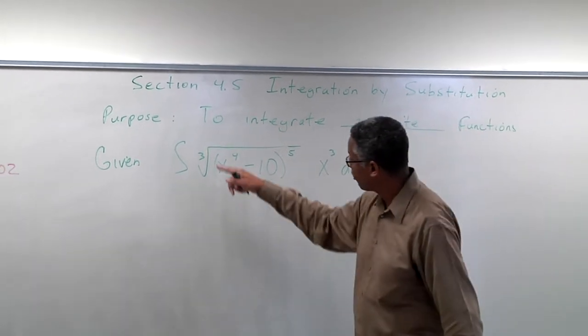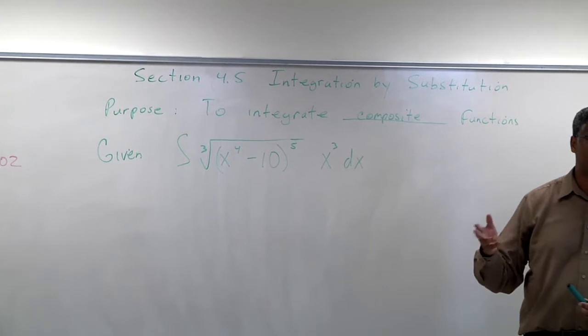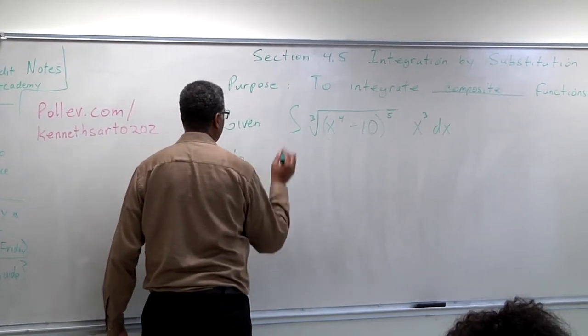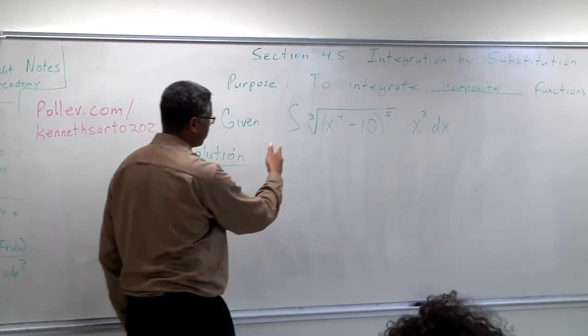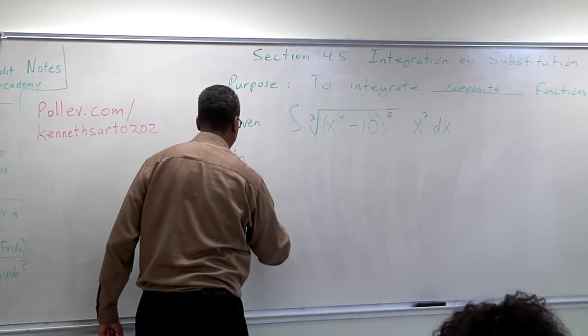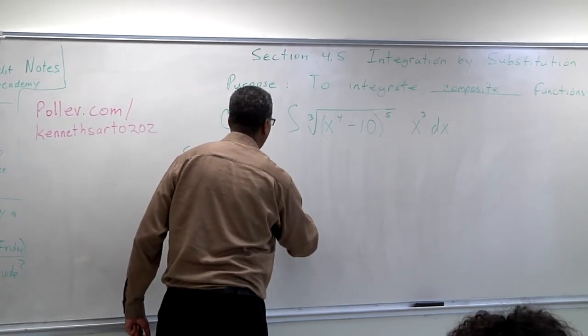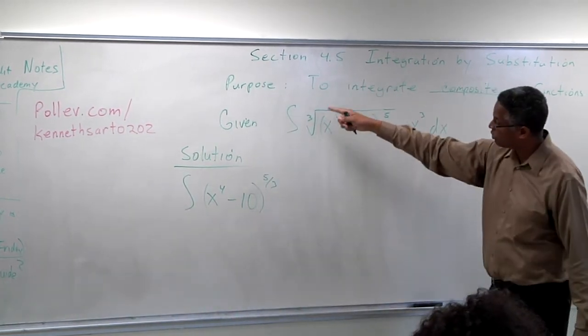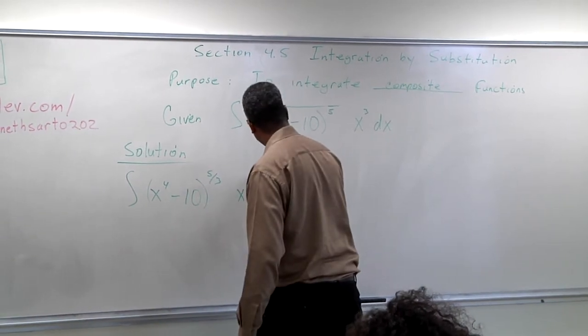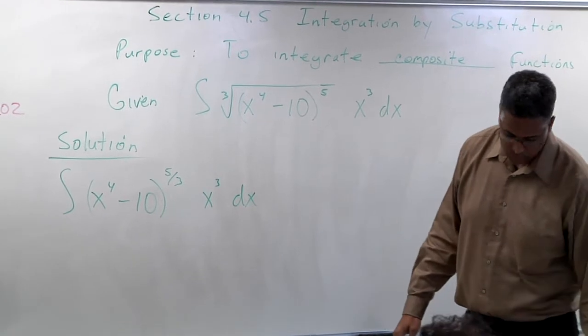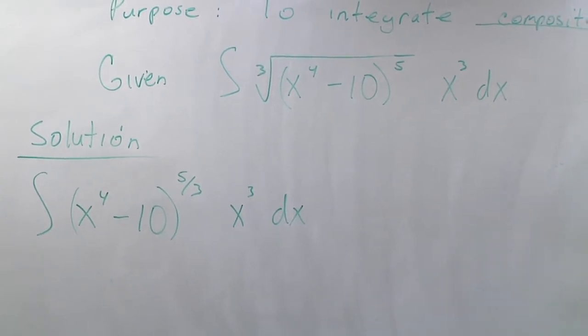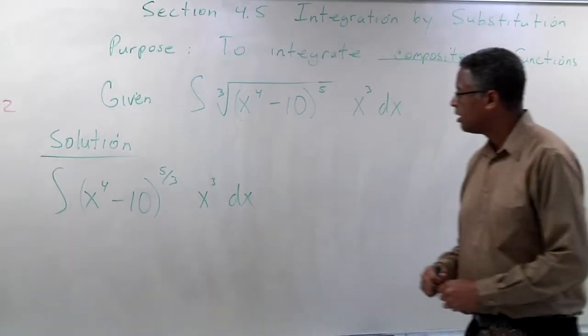So we're going to illustrate this concept with an example, and we're going to go over more details on some of the formulas and theory. But for now, let's just work through an example. So suppose we are given the integral of the cube root of x to the 4th minus 10, we're going to raise that to the 5th power, times x squared dx. So that is our given problem. Any time that you see a radical expression, the first thing you should always do is restate that as a fractional exponent. So now we're working on the solution. The first part of the solution is restating the radical as a fractional exponent. So we're going to get x to the 4th minus 10. We know for these types of problems, the root is always going to be the denominator. The exponent is going to always be the numerator. And we have x cubed dx. So all I've done so far, all I've done is restate the problem. I have not really done any calculus yet.